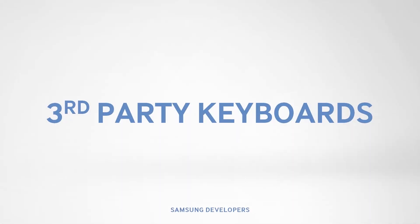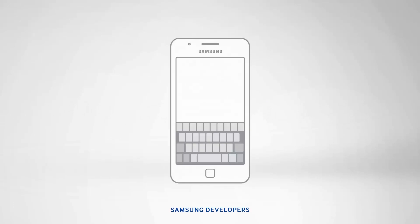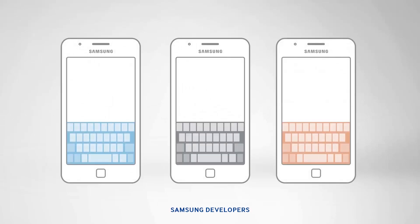The first feature we'll show is the support for third-party keyboards. With Tizen 2.4, third-party keyboard developers can now create their own input method editors, or IMEs, to use and share on Tizen. This third-party keyboard can be packaged as native. And the best part? All application types are supported, so whether you're using a web app or a native app, your favorite third-party keyboard will work just fine.